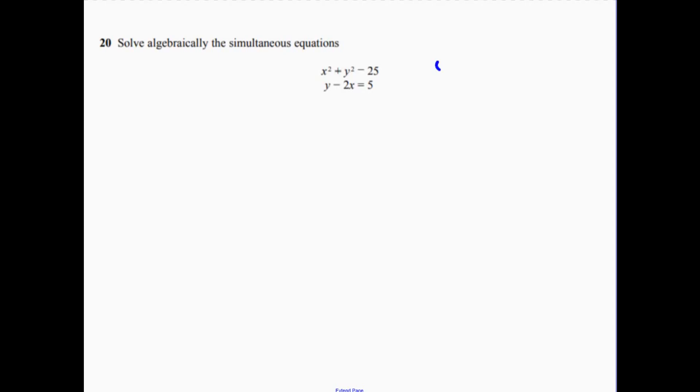Question 20. Let's rearrange the linear part first. That's actually an equals there. So that's just going to be y equals 2x plus 5.